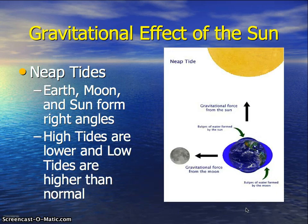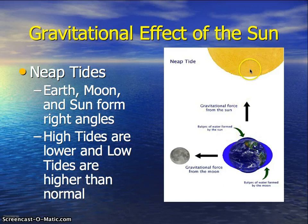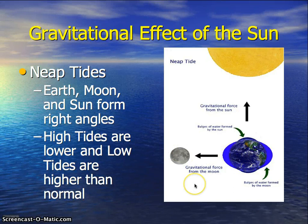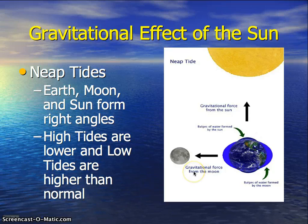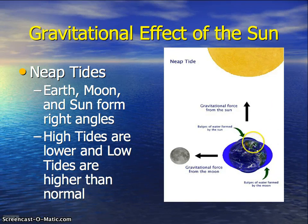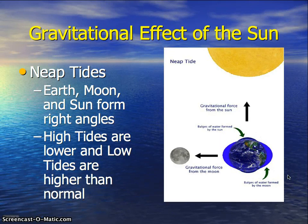The other type is a neap tide, which happens when the sun, Earth, and moon form a right angle. During a neap tide, the high tides are lower and the low tides are higher than normal. This happens during a first quarter or third quarter moon — when the moon looks half lit up. The sun creates a small bulge of water while the moon creates a larger bulge, resulting in higher low tides but lower high tides.